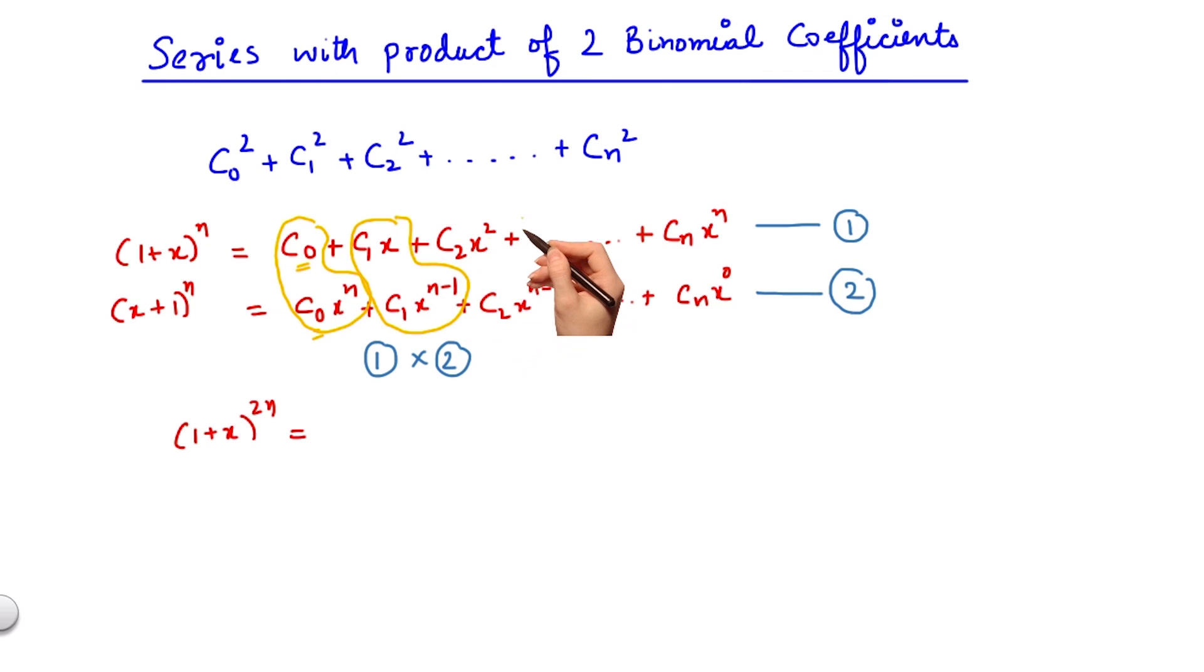Similarly, if I multiply c2 x square with c2 x to the power n minus 2, I get x to the power n, and so on. For the nth term, if I multiply cn x to the power n with cn x to the power 0, I get x to the power n.